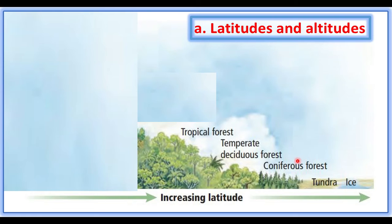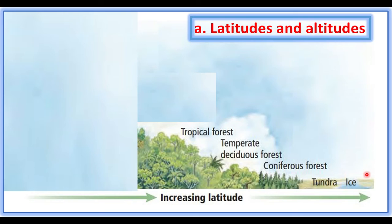Latitude is the distance from the equator towards the polar region. The equator has high temperature, and the temperature decreases towards the North and South Poles. Because of this varying temperature, there are variations in the vegetation between the equatorial and polar regions.